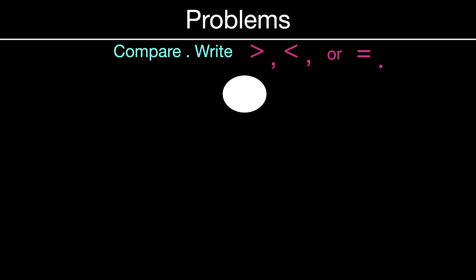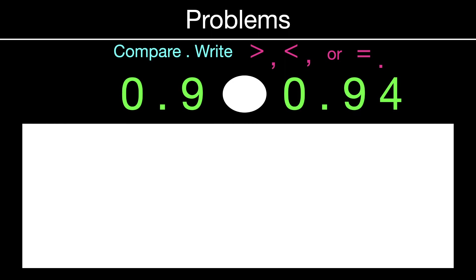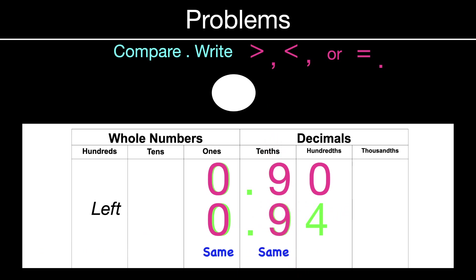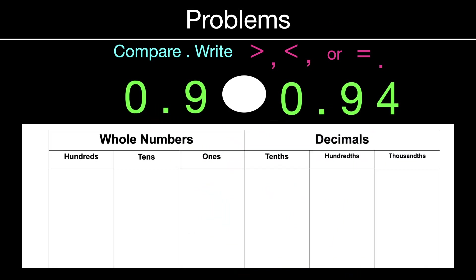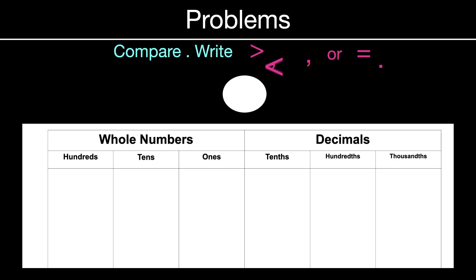Let's do some problems — comparing using greater than, less than, or equal. Nine tenths and 94 hundredths. Bring back the place value chart, line up our decimal places, and put in our placeholder. Working from left to right — ones are equal, tenths are also the same, but in the hundredths they're not the same. The four is greater, which means the bottom number is the greater number. This reads: nine tenths is less than 94 hundredths.